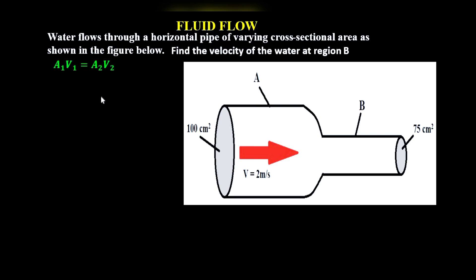Where A1 is the cross-sectional area of the wider part and V1 is the velocity of water in the wider part, that is region A. And A2 is the cross-sectional area of region B, and V2 is the velocity at region B.